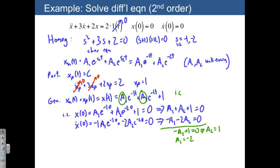So now I have my overall solution, x of t is equal to a1 negative 2 e to the negative 1t plus a2 1 times e to the negative 2t plus our particular solution, which was equal to 1, and this is for t greater than or equal to 0.